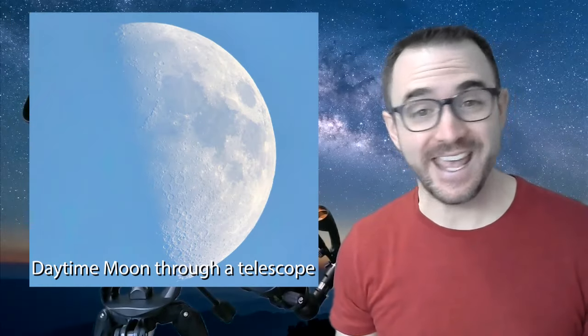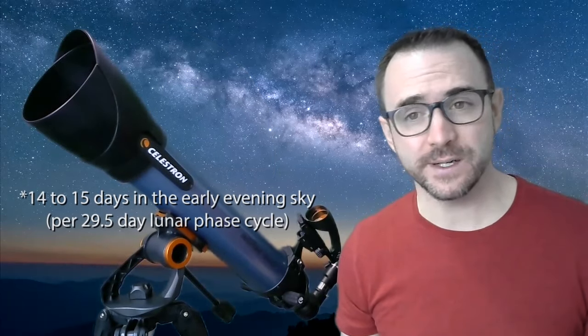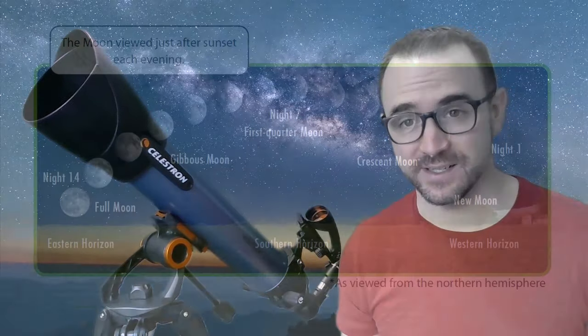So first, we're going to look at the technical aspect. How do you find the moon and how do you point a telescope at it? Well, the moon is the most basic and easiest to find target in the sky. It's observable both during the day and night with or without a telescope. That said, it's important to understand that only for about 14 or 15 days is it visible in the evening sky right after sunset.